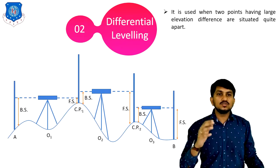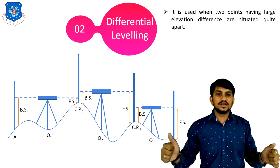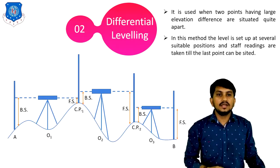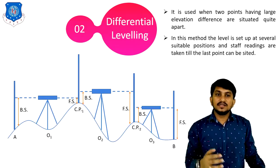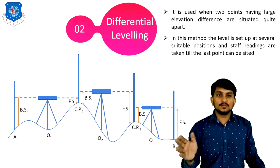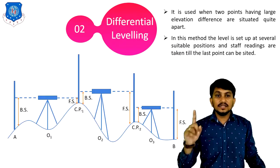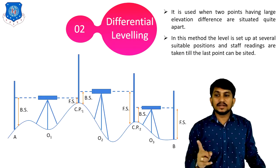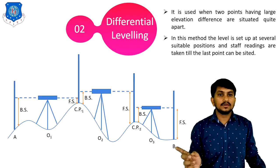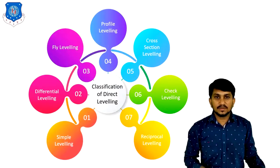This is called differential leveling. It is used when two points having a large elevation difference are situated quite far apart. In this method, the level is set up at several suitable positions and staff readings are taken till the last point — like B — can be sighted.